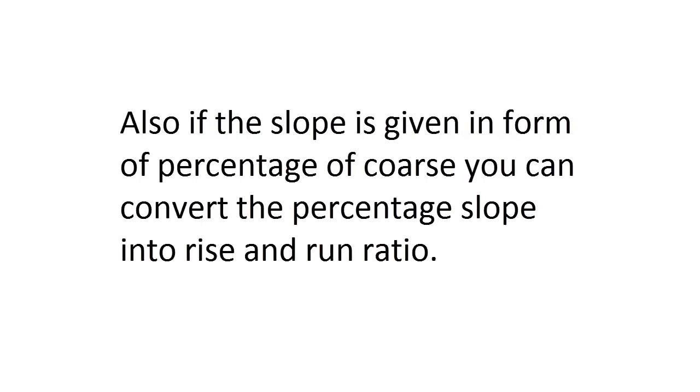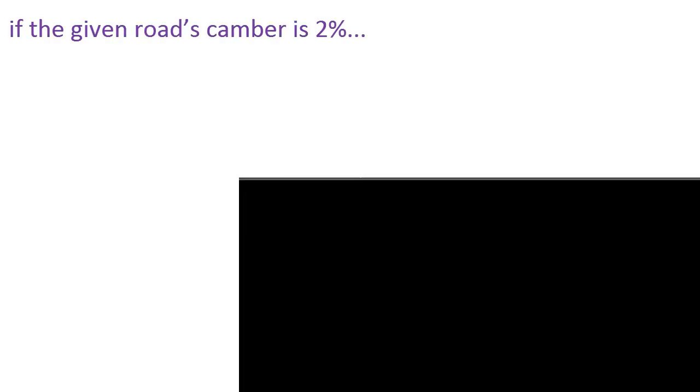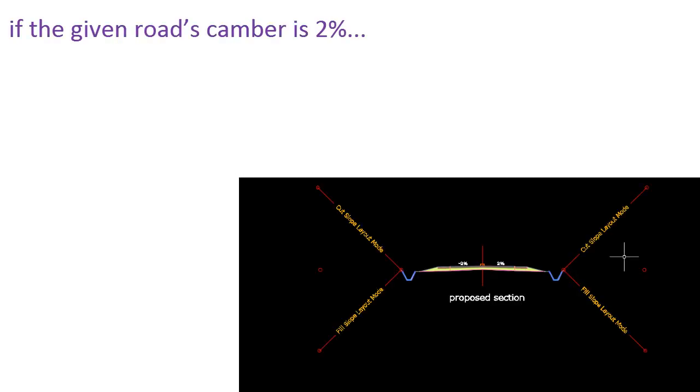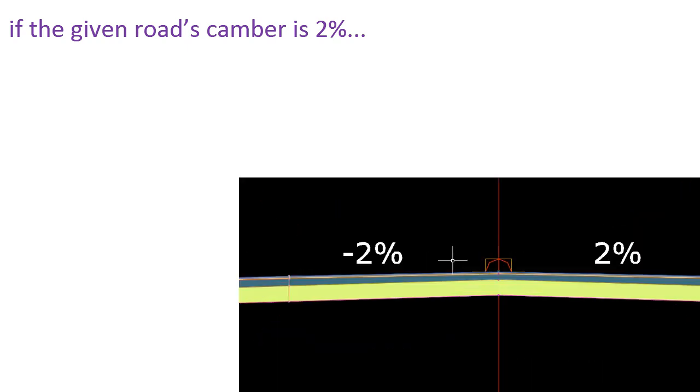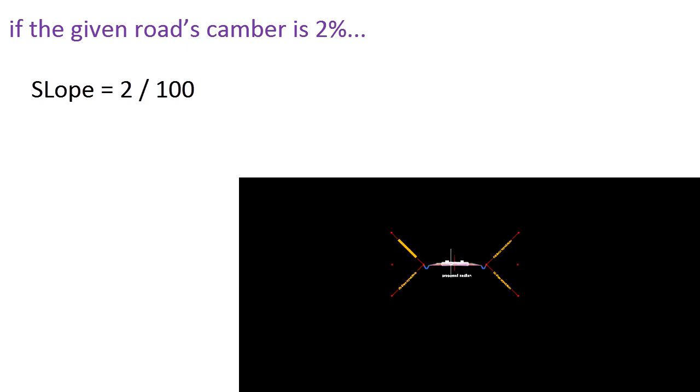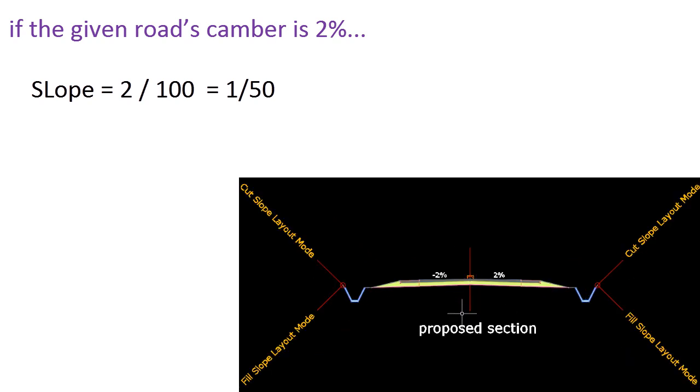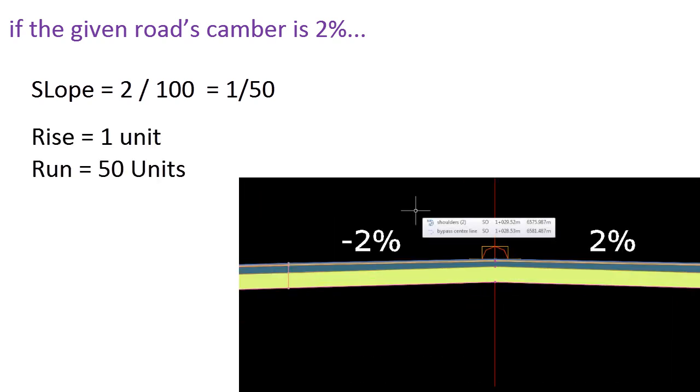If the slope is given in percentage, you can convert it into rise and run ratio. For example, if the given road camber is 2 percent, we can convert it into rise and run ratio by dividing by 100. If you divide 2 percent by 100, you get 1 over 50, or 1:50 slope. So the rise is one and the run is 50 units.